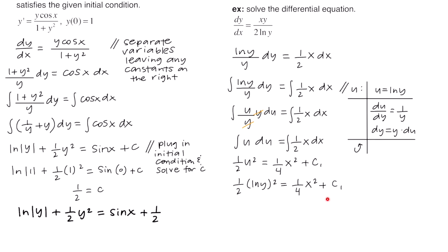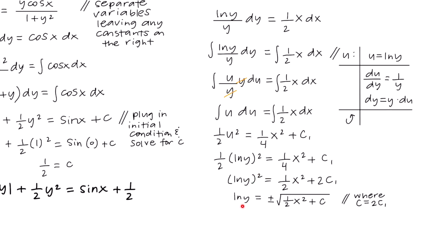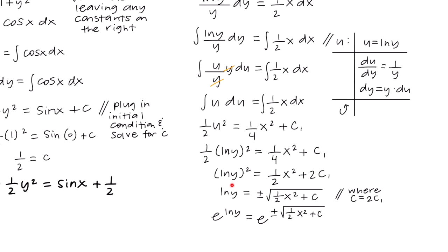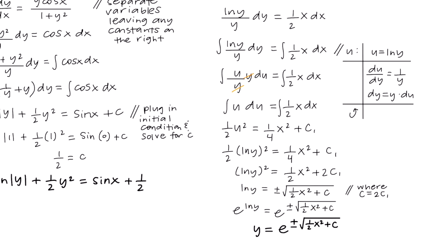Since there's no initial condition, we continue and solve for y. Multiplying both sides by 2 eliminates the 1/2, giving (ln y)² = (1/4)x² + 2c₁. Taking the square root of both sides gives ln y = ±√((1/2)x² + c). To isolate y, we exponentiate using base e on both sides. The final answer is y = e^(±√((1/2)x² + c)).